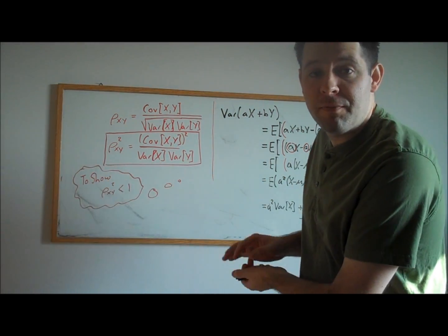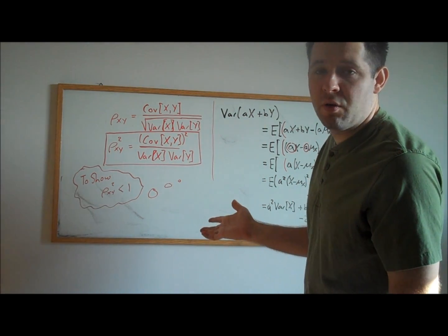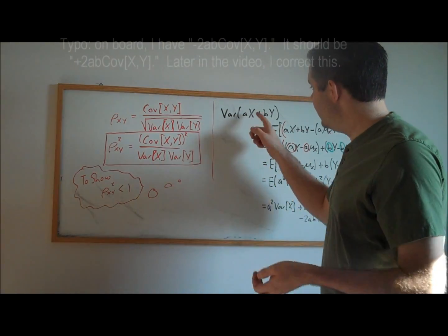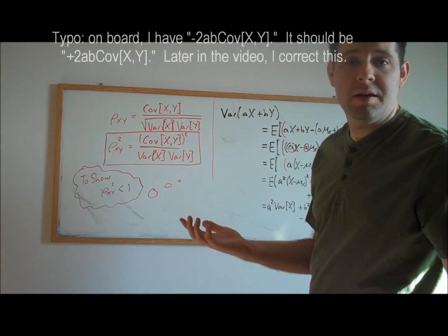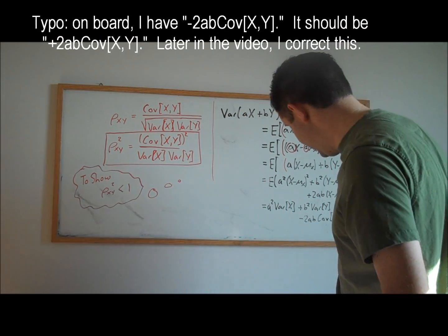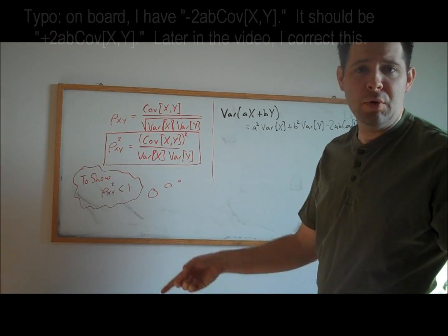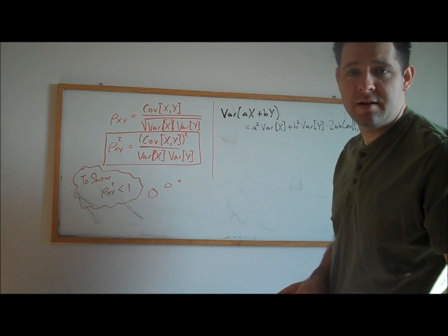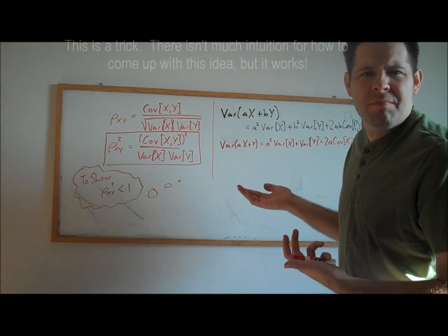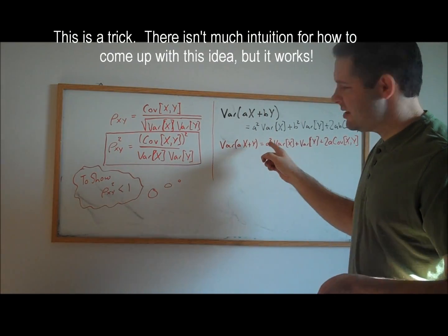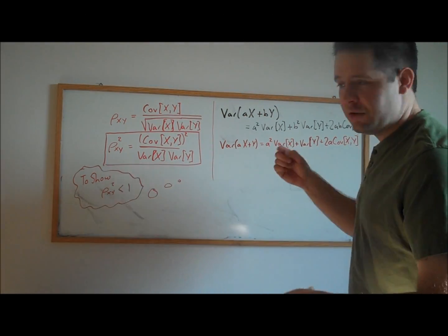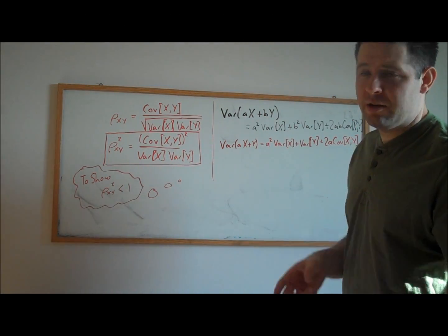Apart from being a useful formula to prove this result on correlations, this is going to be a useful formula in general whenever we have linear functions of random variables. So proving the general case is actually quite a nice thing to do at this stage. To go ahead and prove this result, let's consider this formula, but for the special case where b equals 1. Let's just go ahead and minimize the value of a. So let's take the first order condition of this expression with respect to a. Just take the derivative with respect to a, set it equal to 0.